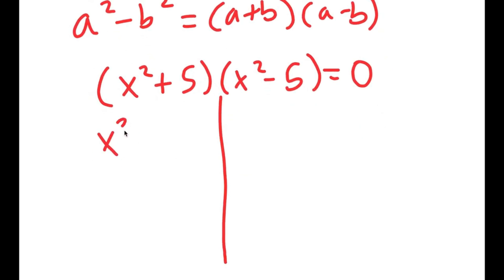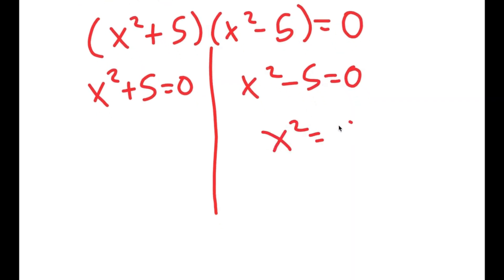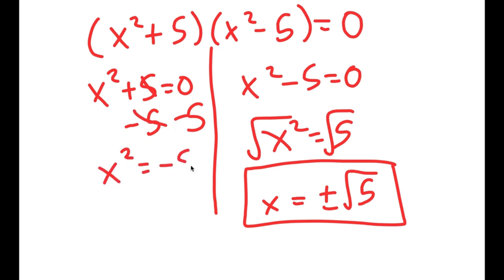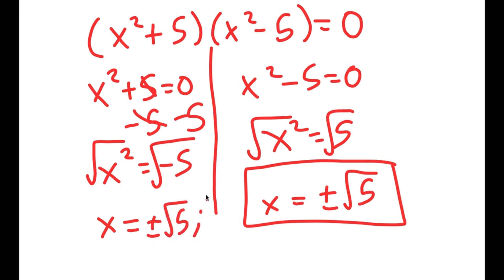So I get two equations: x squared plus 5 equals 0 and x squared minus 5 equals 0. For x squared minus 5 equals 0, I get x squared equals 5, and taking the square root on both sides gives x equals positive or negative square root of 5. For x squared plus 5 equals 0, I subtract 5 on both sides to get x squared equals negative 5, and taking the square root gives x equals positive or negative square root of 5 times i. So these are my four solutions to this equation.